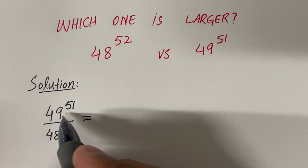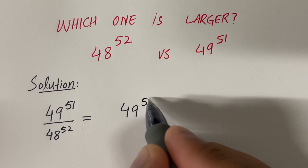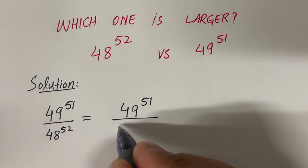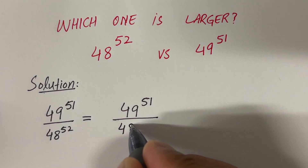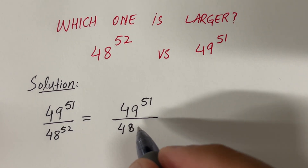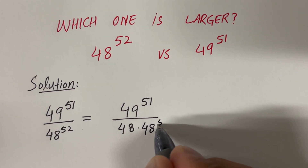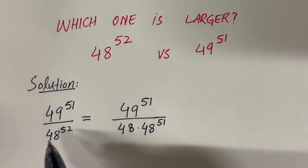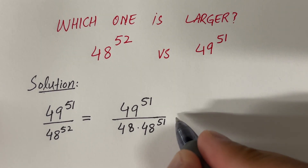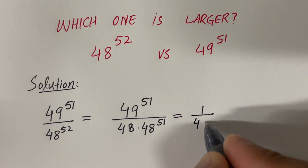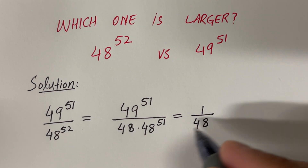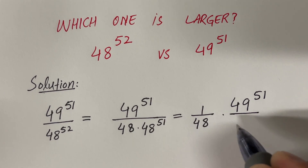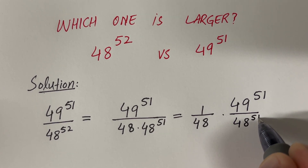I can write 49 raised to the power 51 as it is, and then 48 raised to the power 52 can be written as 48 times 48 raised to the power 51, because the exponent of the separate 48 is 1, and 1 plus 51 is 52. This gives us 1 over 48 times 49^51 over 48^51.